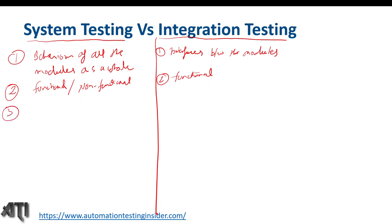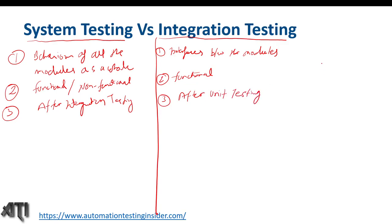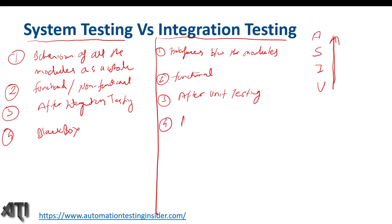The third difference: we perform system testing after integration testing. The testing levels in software testing are: unit testing, integration testing, system testing, and acceptance testing. The fourth difference concerns technique: in system testing we use the black-box technique; in integration testing we use black-box plus white-box techniques.